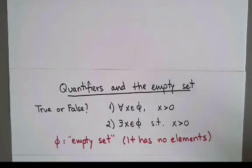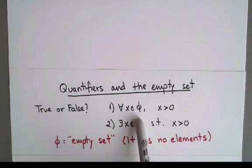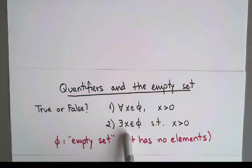I've written here two statements, and I want to know whether they're true or false. The first one is, for every x in the empty set, x is positive, and the second one says there exists an element x in the empty set such that x is positive.